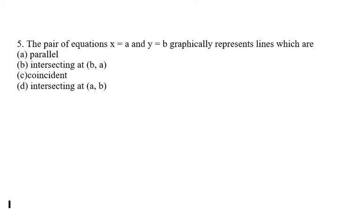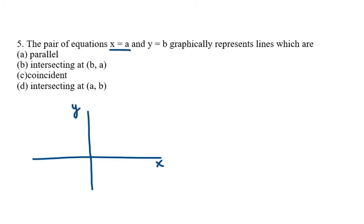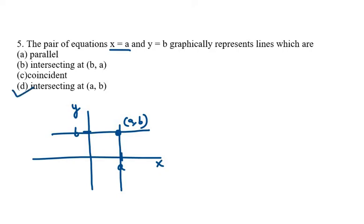Question number five: x = a is a straight line parallel to the y-axis. Drawing a rough figure with x = a as a vertical line and y = b as a horizontal line, we can see that these two lines intersect at the point (a, b). The correct option is therefore 'intersecting at (a, b)'.